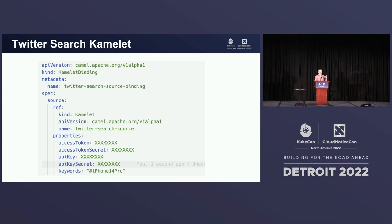This is the Twitter search Camlet. It's really just a bunch of YAML. As long as you have your access token, your API keys, your secrets, and some sort of search term that you want to search for, you're set. You deploy this thing, it starts polling the Twitter search API, converting those results into cloud events, and sending them directly to the default Knative Event Broker.